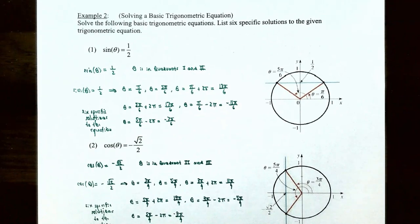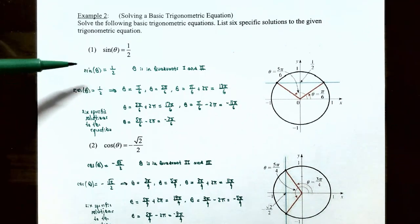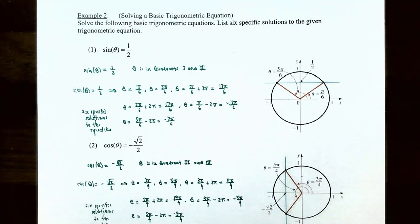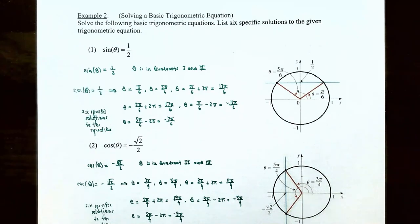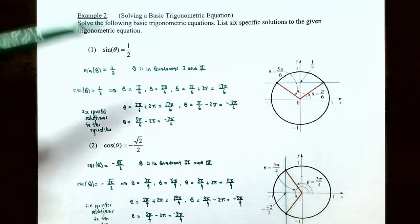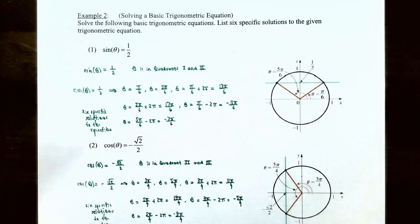Example 2: solve the basic trigonometric equation sin(θ) = 1/2, and list six specific solutions. Since sine is positive, θ is in quadrant 1 or 2. The sine function has a period of 2π, so we first find solutions between 0 and 2π: θ = π/6 (quadrant 1) and θ = 5π/6 (quadrant 2), since sin(π/6) = sin(5π/6) = 1/2.